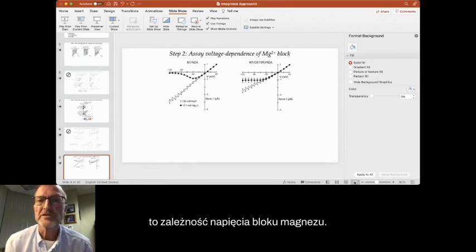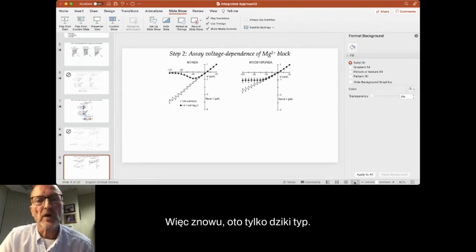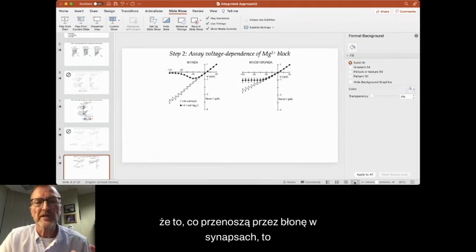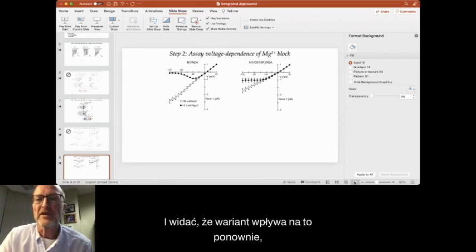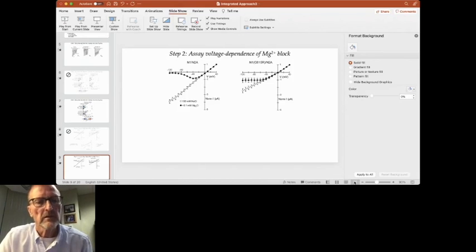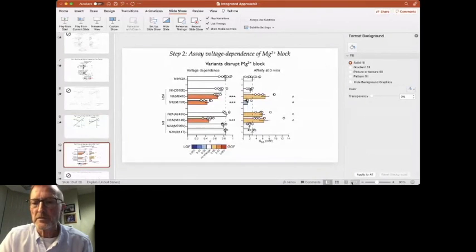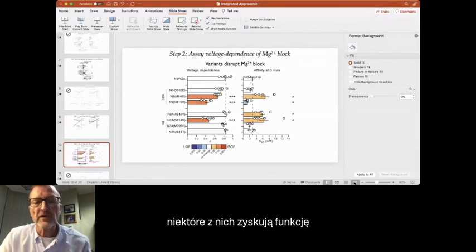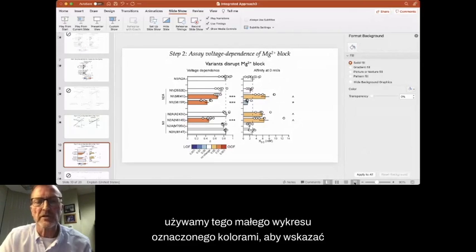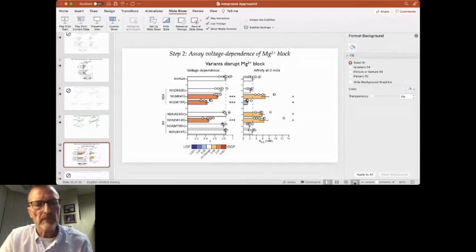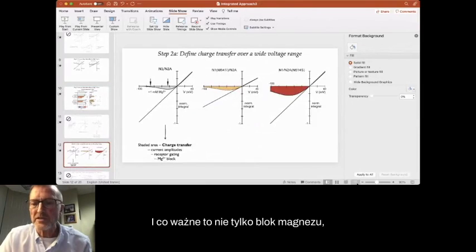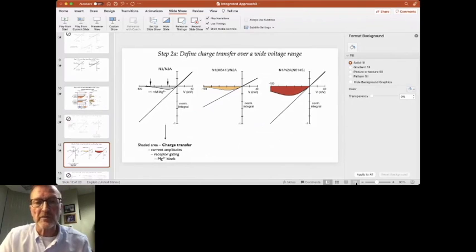And another part is the voltage dependence of magnesium block. So again, here's just wild type. This is a hallmark of NMDA receptors, that they're modified, that their charge, that what they carry through the membrane at synapse is regulated by magnesium. And you can see that a variant affects this. Again, this is a single property. And here's all these variants that we've looked at, a large number of these variants. We see that some of them are gain of function and some of them are loss of function. Again, you don't have to worry about the absolute numbers because we're using this little color coded chart here to indicate loss and gain of function. But again, this just reflects one of the parameters, right? Magnesium block.